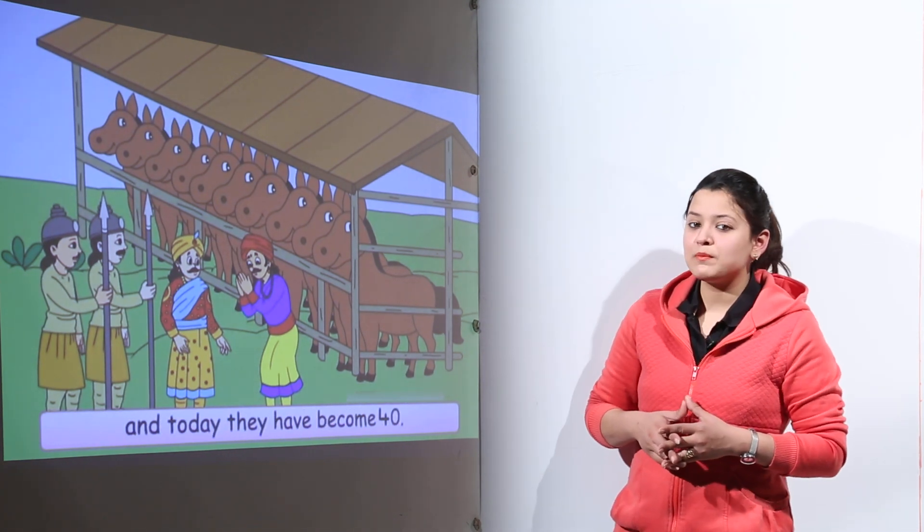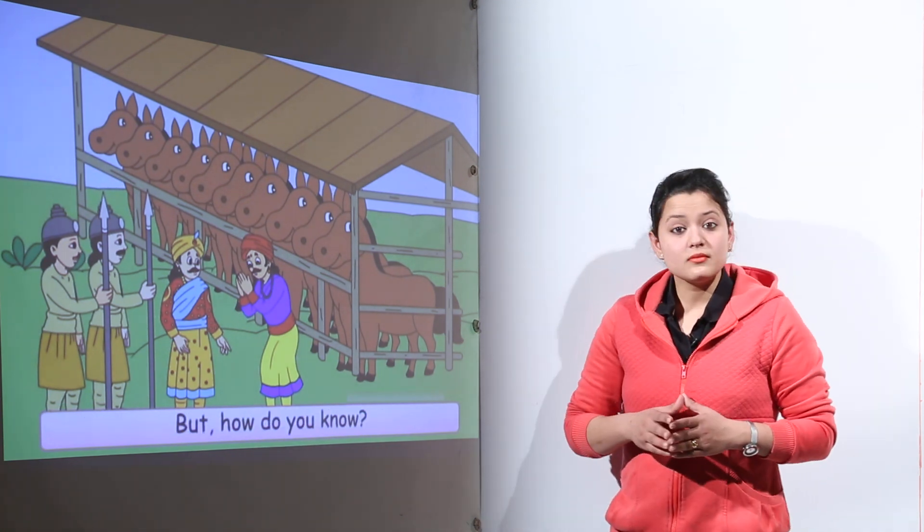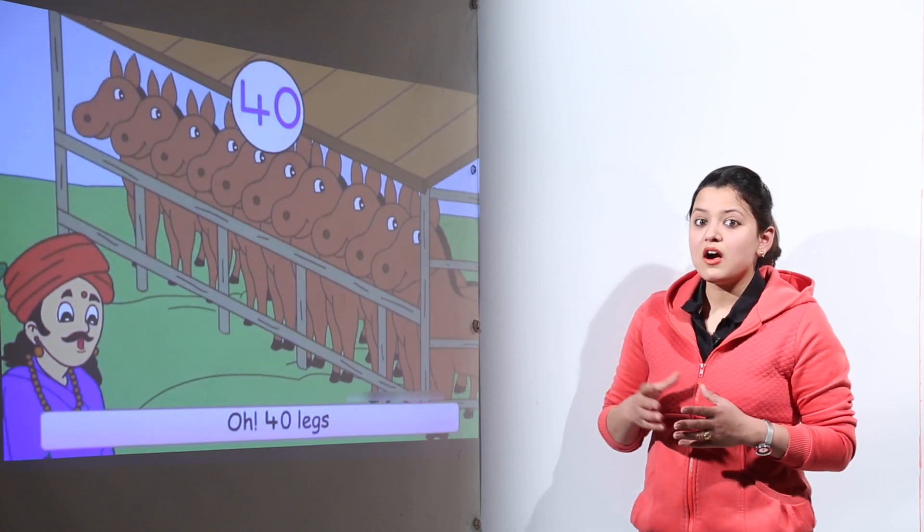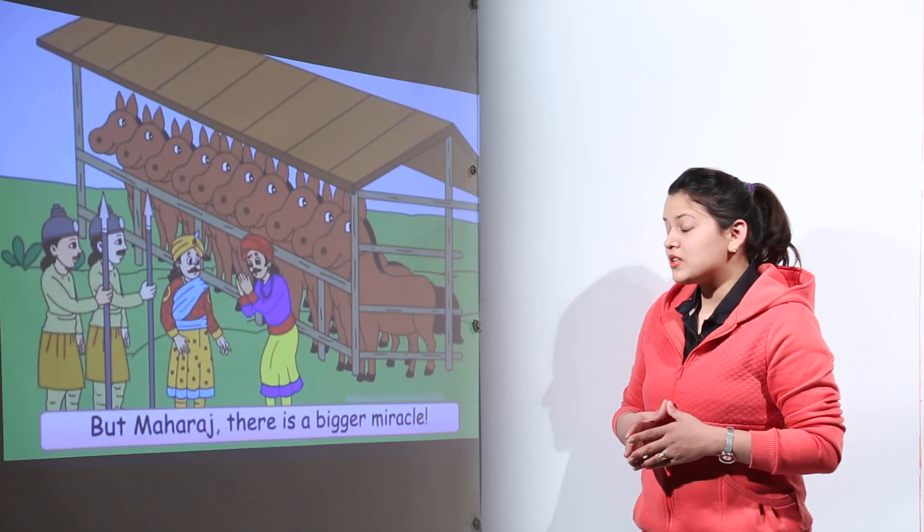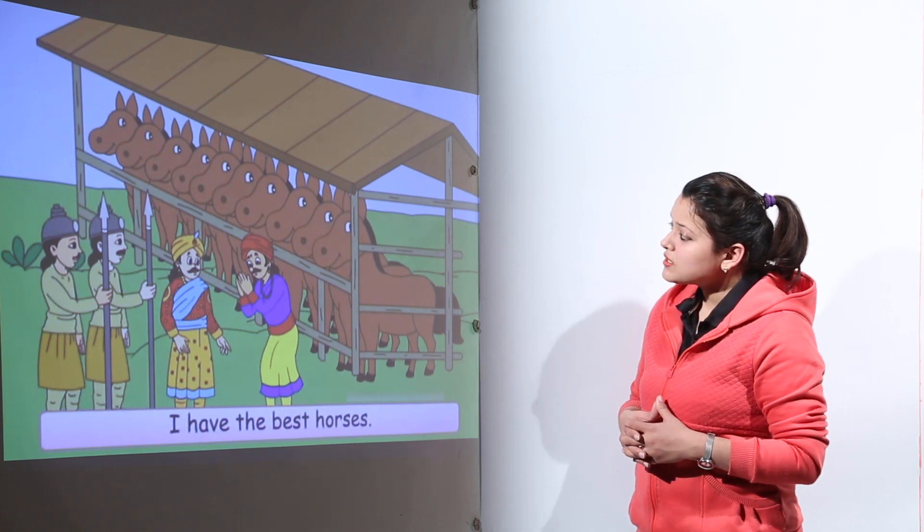And asked him to help the Maharaja to understand it. So the minister came up and he asked the Maharaja how did you come to know that there are 40 horses. So the Maharaja explained that he counted the 40 legs and he came to know that there are 40 horses.